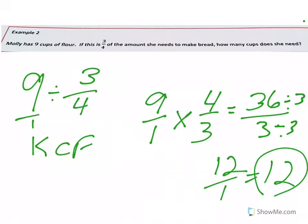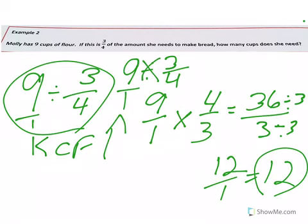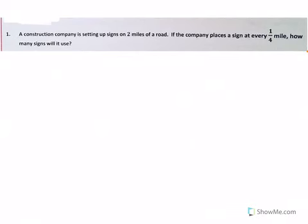So you can use either model, whatever helps you. The visual model, I think, does help you see it, and you can manipulate that. But if you know the order to put these in here, then you can decide if you want to do the keep, change, flip. But just keep in mind, if you're doing a whole number divided by a fraction, you're used to doing it the other way. Make sure you put the 1 over here, and then you keep this, change it, flip it.